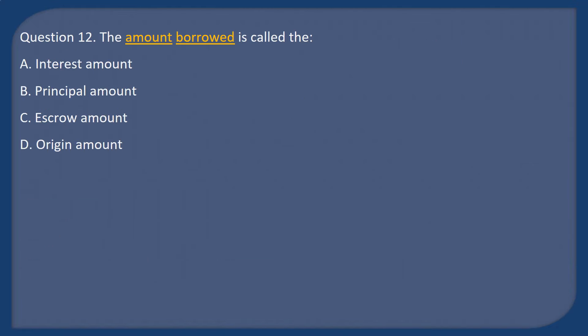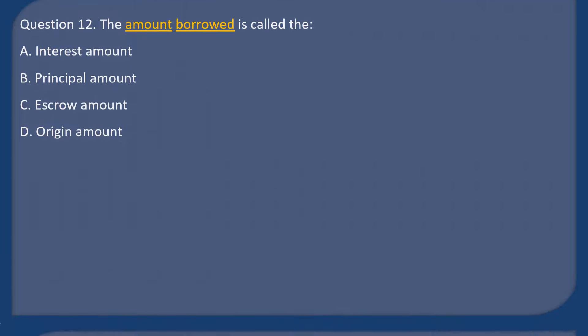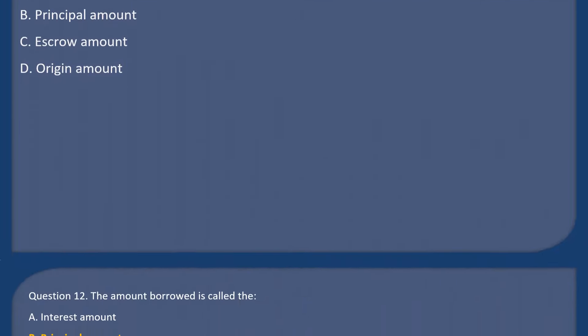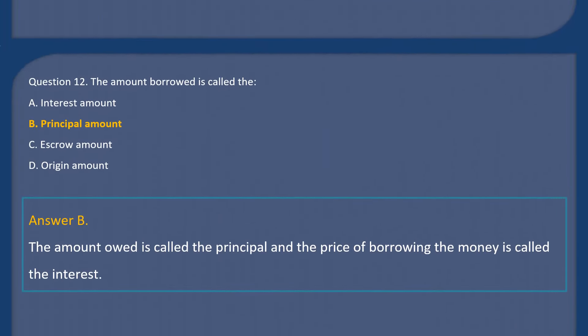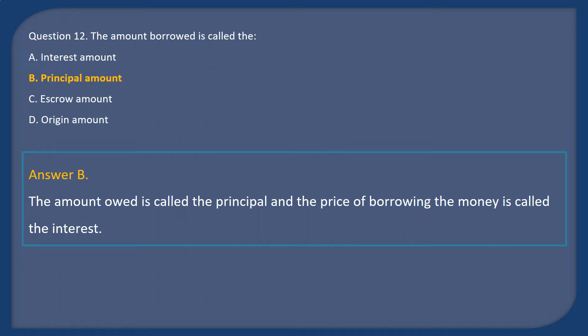Question 12: The amount borrowed is called the: A. Interest amount. B. Principal amount. C. Escrow amount. D. Origin amount. Answer: B. The amount owed is called the principal, and the price of borrowing the money is called the interest.